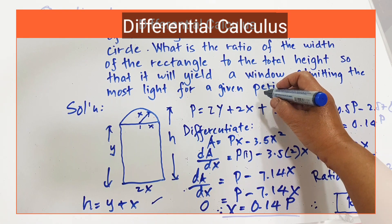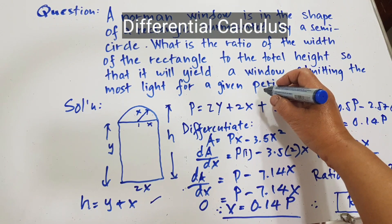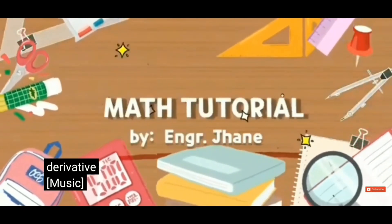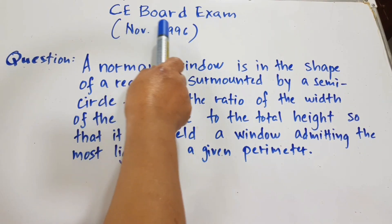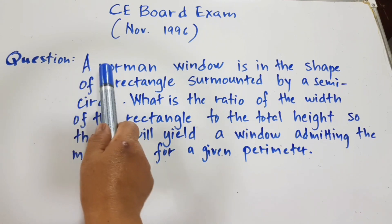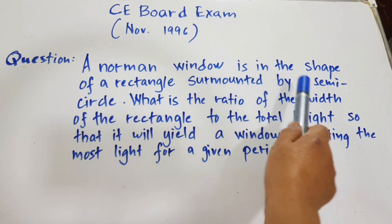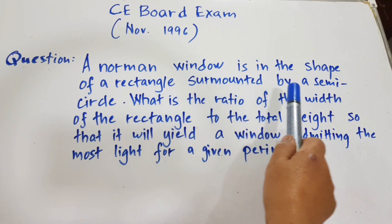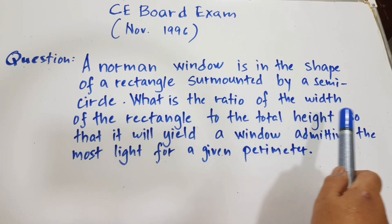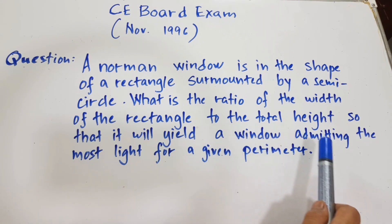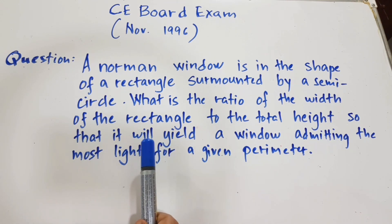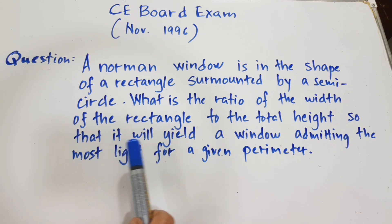Hello, genius! Our problem solving for today is about differential calculus. Our CA Board exam question for today, which was given last November 1996: A normal window is in the shape of a rectangle surmounted by a semicircle. What is the ratio of the width of the rectangle to the total height so that it will yield maximum light for a given perimeter? This kind of problem involves differential calculus.